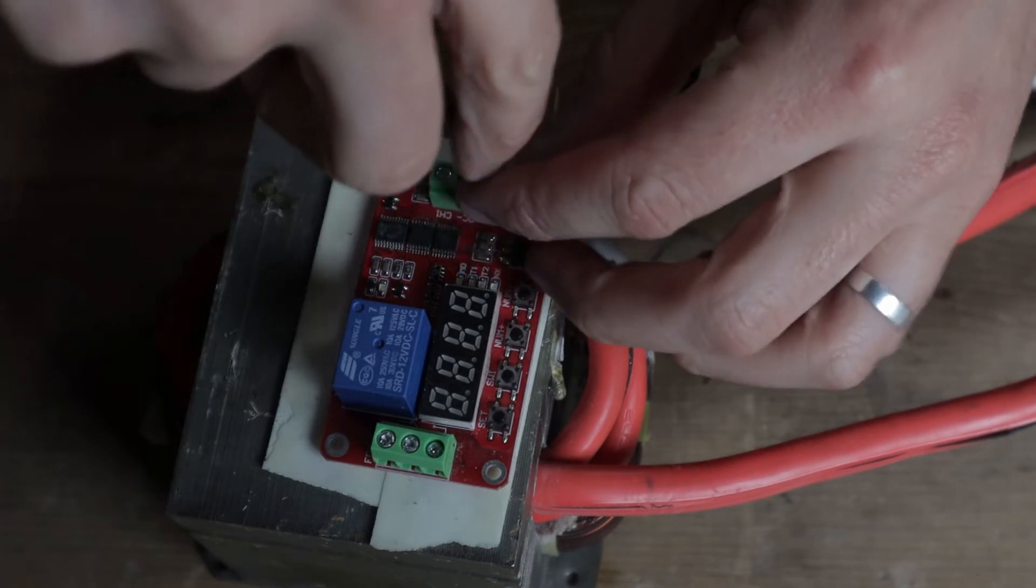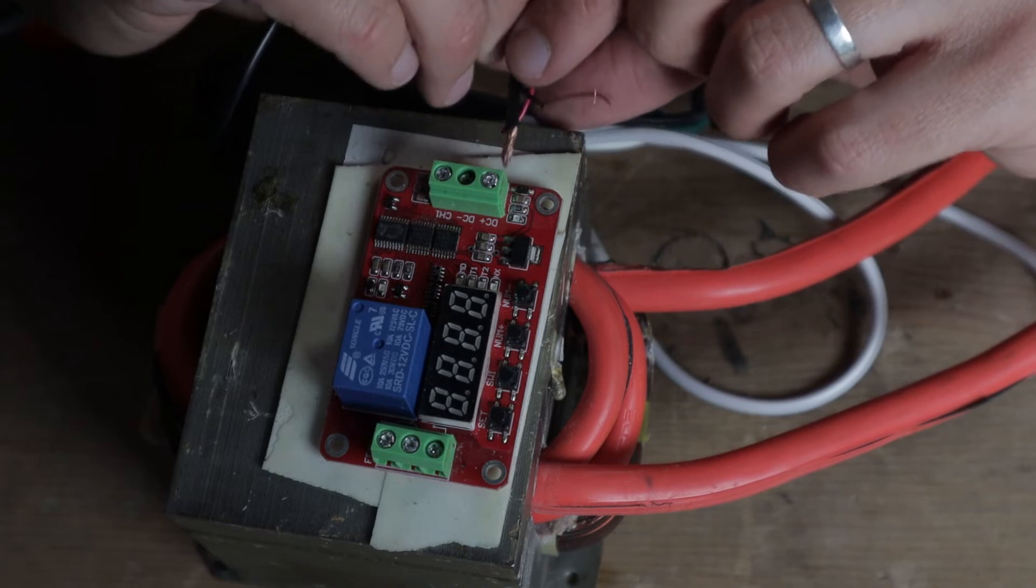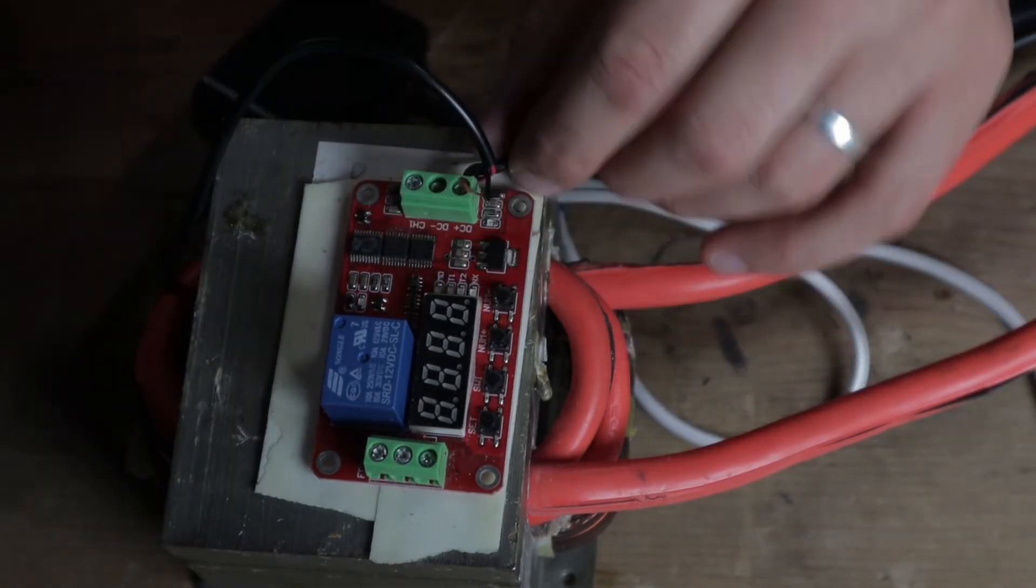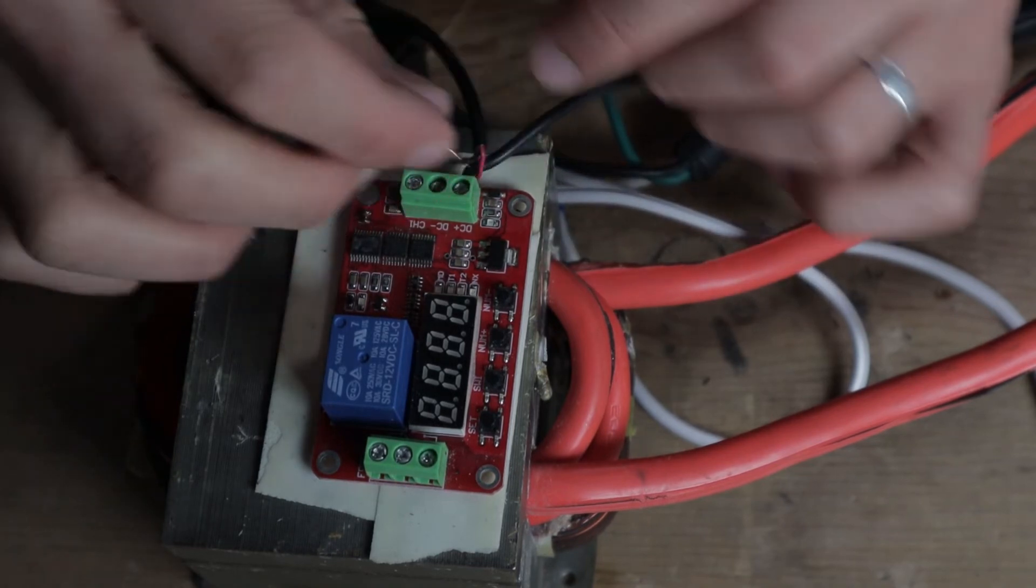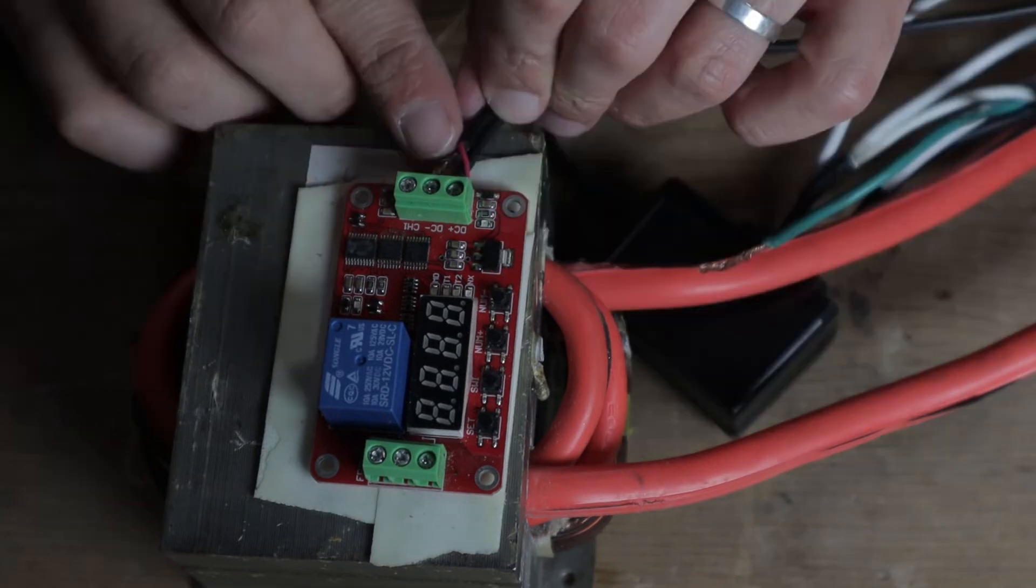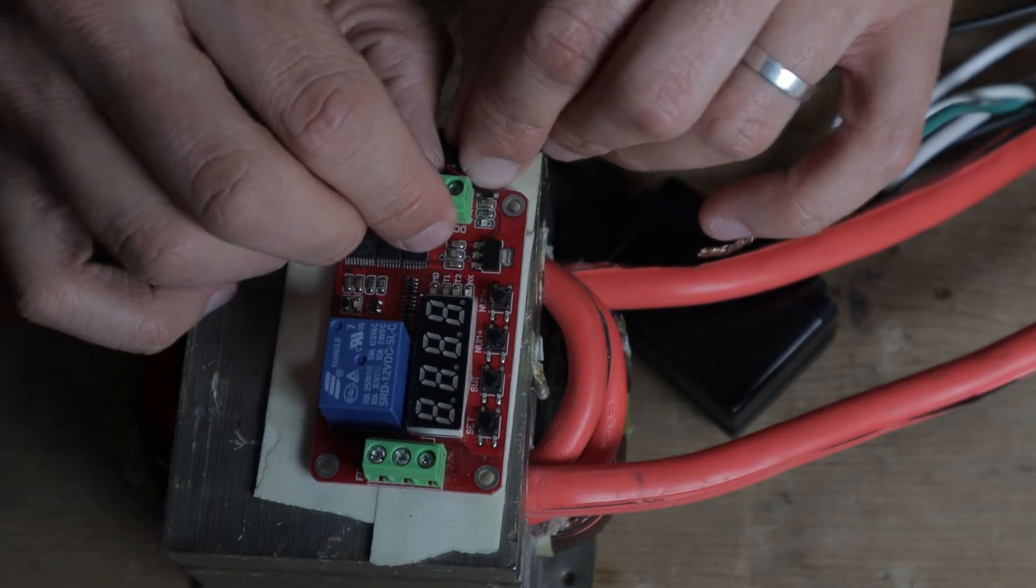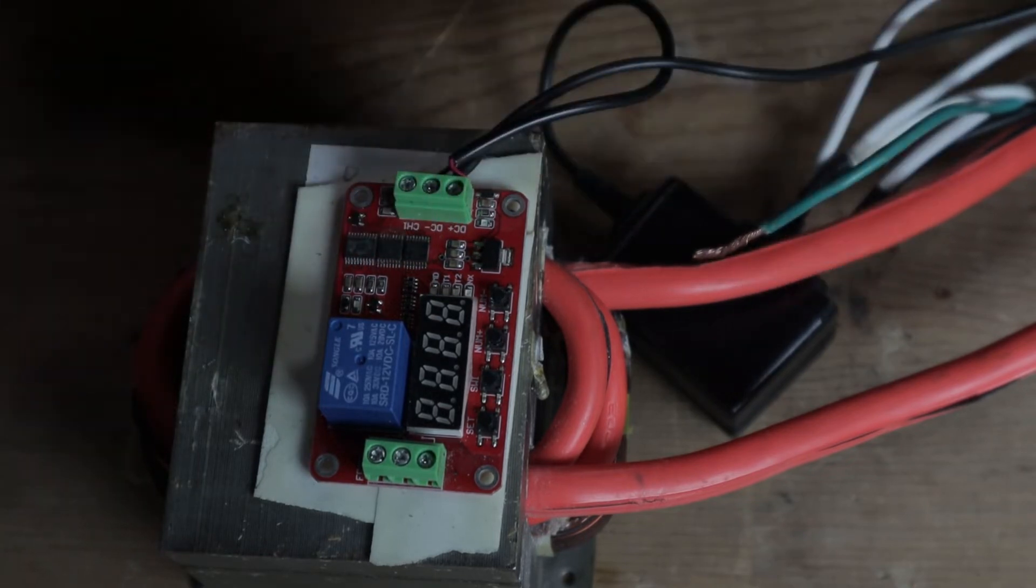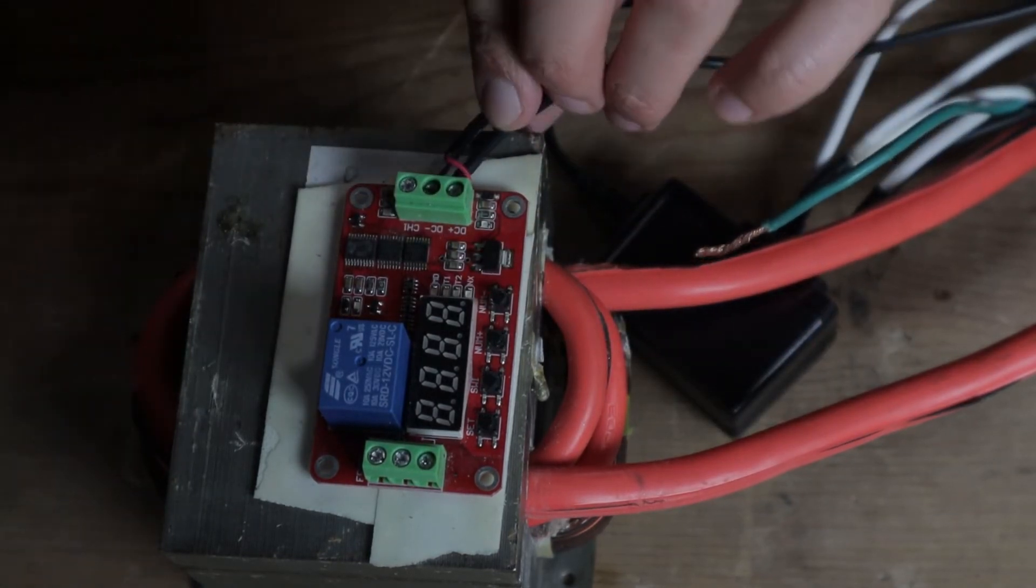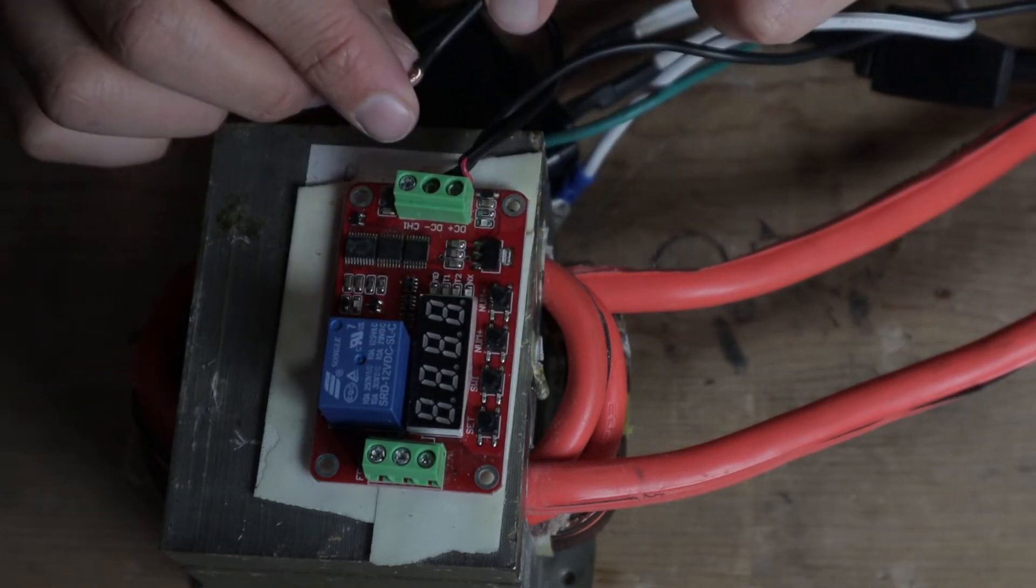So let's go ahead and hook that in. So this is one of the trigger wires. And I'm going to twist that together with the positive wire coming off the DC supply. I'm going to loosen this positive post here. So those are fixed together. And then this negative wire can just go right into the negative.